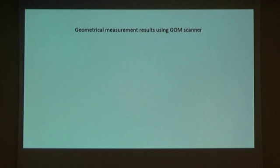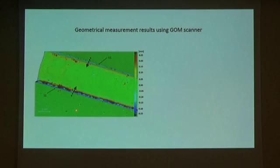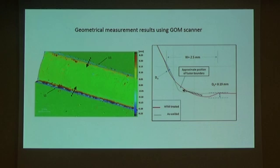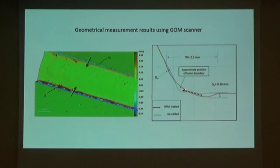For the geometrical measurements using the GOM scanner, if we superimpose the two surfaces before and after treatment for 3D comparison, we notice material transfer because of the treatment from the base metal to the weld region for both lower and upper weld toes. Looking at one surface profile comparing as-welded and after treatment, the difference is not very significant. The fusion boundary position separates the base metal and the weld. We measured a width of treatment of 2.5 mm, a depth of treatment in the base metal of approximately 0.19 mm, and almost no depth of treatment in the weld.